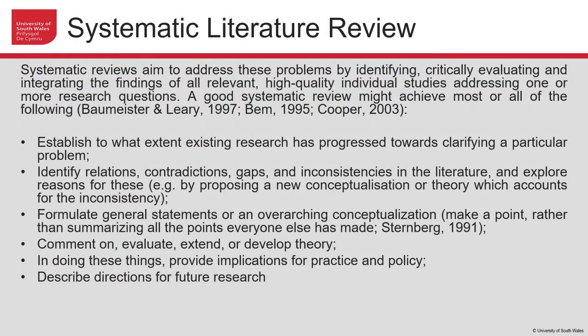A systematic review aims to identify, critically evaluate, and integrate the findings of all relevant high-quality individual studies. A good systematic review should establish to what extent existing literature has progressed towards clarifying a particular problem, identify relations, contradictions, gaps, and inconsistencies in literature, and explore reasons for these — for example by proposing new conceptualizations or theory. It might formulate general statements or an overarching conceptualization, comment on, evaluate, extend or develop theory, provide implications for practice and policy, and describe directions for future research.